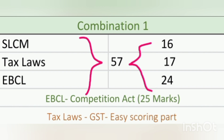Moving into combination two, I have given more focus on Tax Laws and combined two easy chapters of EBCL for one day. Totally we will have 57 chapters in combination two, completing it in 54 days with a quick revision session of notes for three days. Give more importance to the Competition Act in EBCL since it covers 25 marks in the examination — just one chapter, 25 marks. GST would be an easy scoring part in Tax Laws. In SLCM, put and call option sums were asked in the June 2022 examination session — just be strong with those kinds of sums.